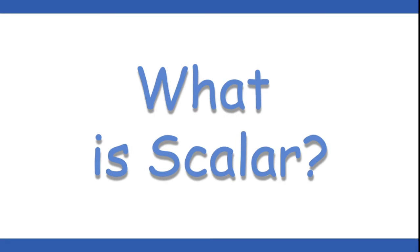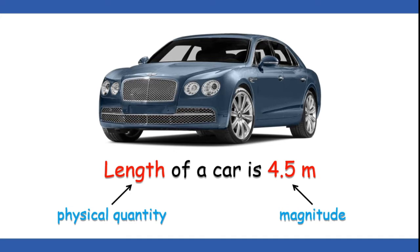First, let us see what is a Scalar. Under Vectors, first we have to know what is a Scalar. For example, I have given an example of a car. Let us say the length of the car is 4.5 meters. Here if you see, there are two parameters: length as well as 4.5 meters. Length in physics is called a physical quantity or physical attribute of some body.